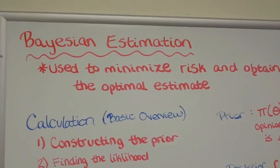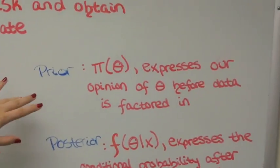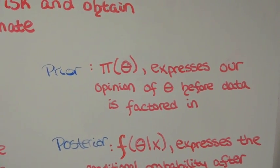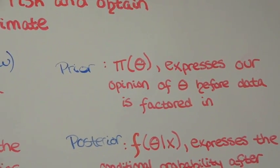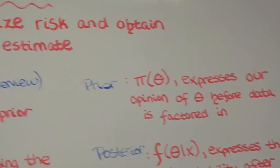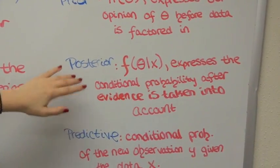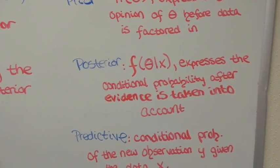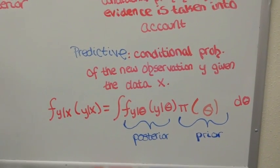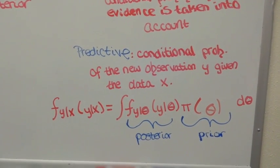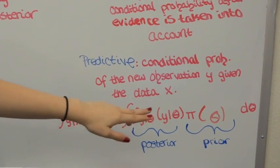Some definitions you'll encounter in Bayesian estimation: first, the prior, denoted π(θ), expresses the user's opinion of the parameter θ before any data is factored in — it's subjective. Then you have the posterior, f(θ | x), which expresses the conditional probability after taking into account all your evidence. Finally, the predictive distribution is the conditional probability of a new observation y given past data x, found by taking the integral with respect to θ of the posterior times the prior.